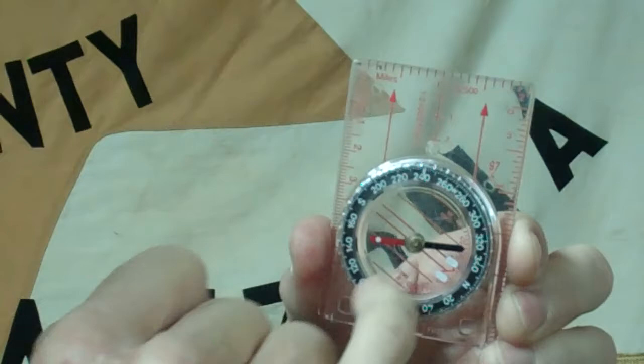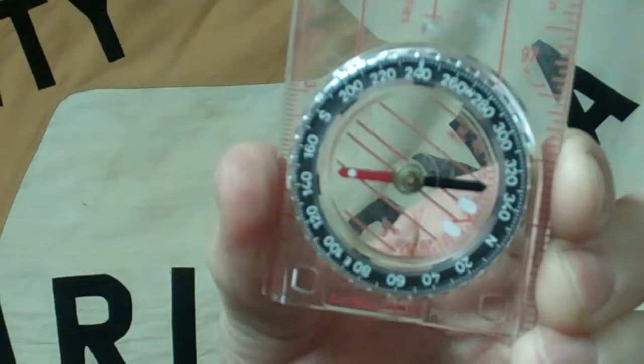And inside the bottom, it may be a little bit difficult to see by the camera, but there is a north orienting arrow. They both rotate with the bezel.